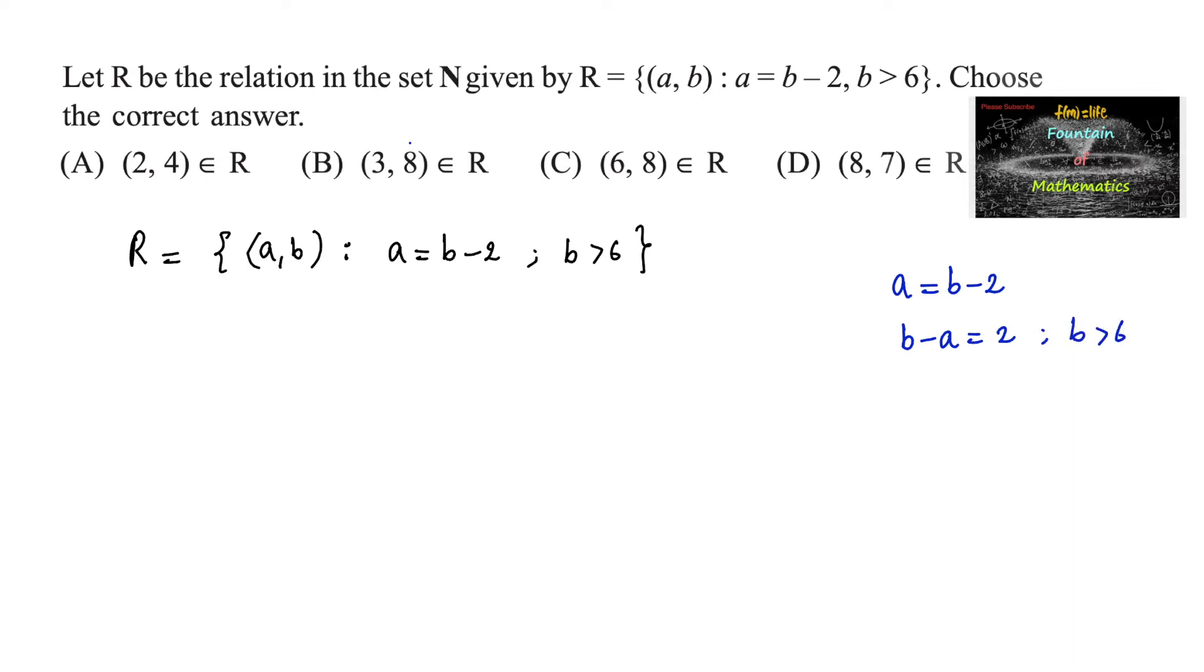If you see the options, the first option (2, 4), so b must be greater than 6. Here b is equal to 4, which is less than 6, so we can rule out the first option.